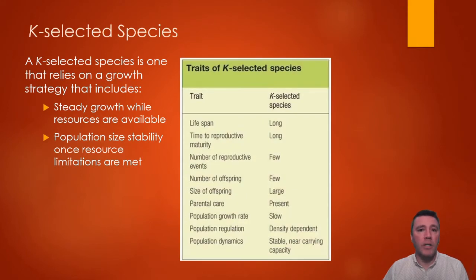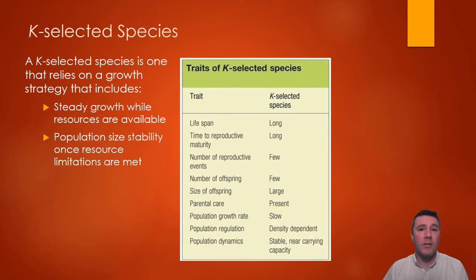K-selected species have a relatively long lifespan and require a relatively larger proportion of that lifespan to reach reproductive maturity. K-selected species tend to only have a few reproductive events during their lifetime, creating a small number of offspring that are relatively large. Because fewer numbers of offspring are produced, population growth is slow, and parental care in K-selected species tends to be extremely high. A K-selected species is subject mainly to density-dependent limiting factors.